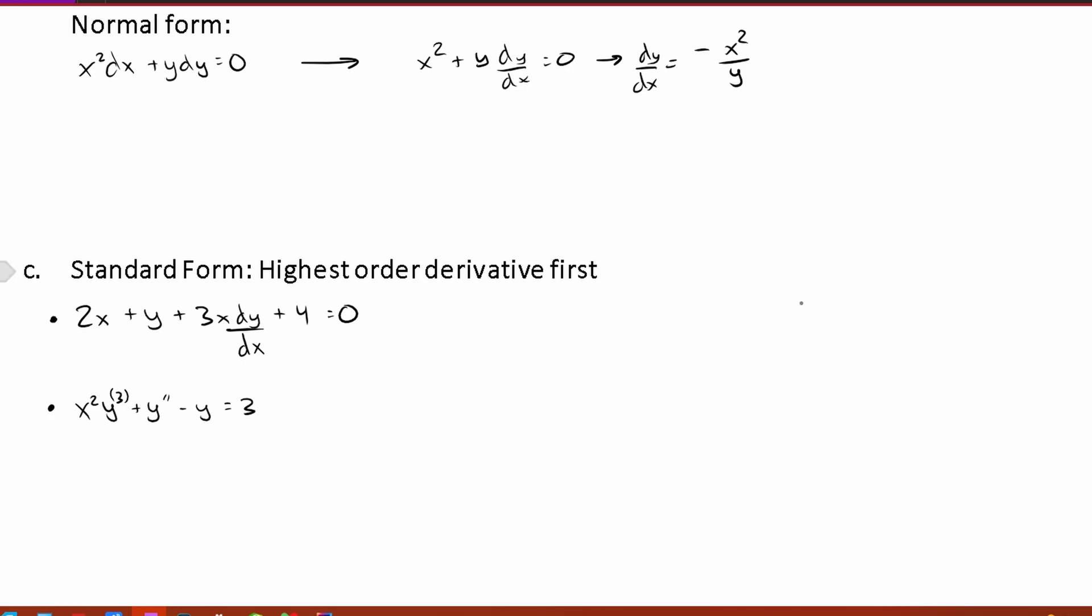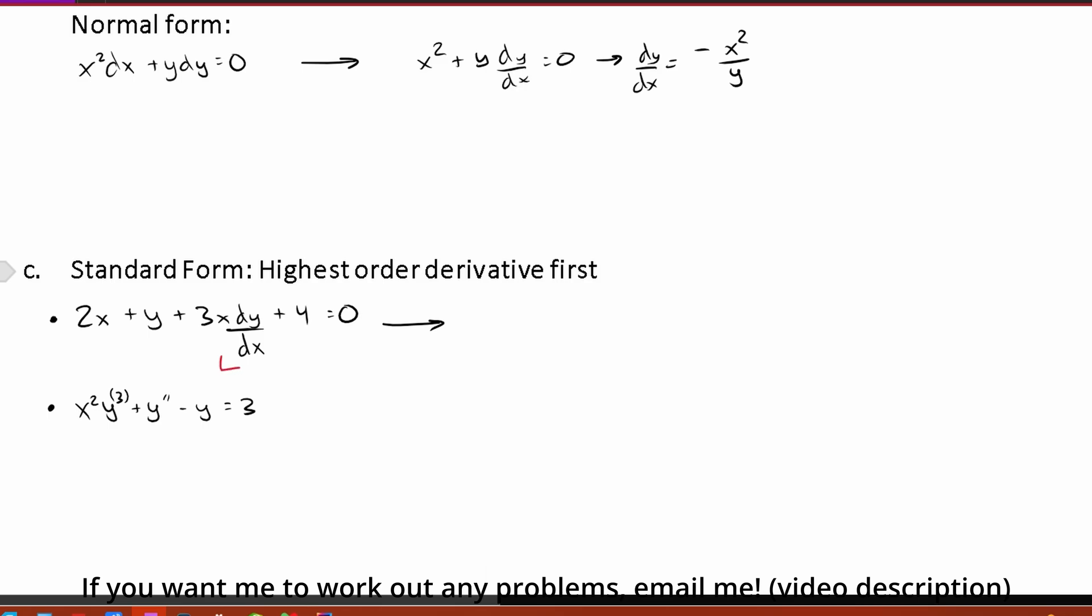This is the last one that we're going to be doing. So with standard form all we want is to have the highest order derivative first. Let's look at this first one here. For standard form we want obviously dy dx to be in first and we only have one differential part of our equation. So that's all we have to put in front. We don't really want anything touching it either. So let's divide everything by 3x. We'll have 2 over 3 plus y over 3x plus 4 over 3x is equal to zero. It's kind of ironic that I said our dy dx needs to be in front and I did everything else first but I left enough space here to where I can just put dy dx in front.